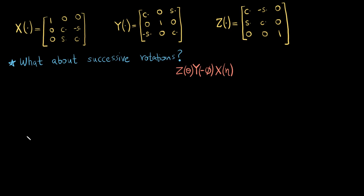Now let's say if a point first rotates about one axis, then rotates about another axis, or it can rotate about as many axes as it wants to. So if a point first rotates about the z-axis by theta, then rotates about the y-axis by negative phi, and then rotates about the x-axis by angle nu — how do we write the rotation matrix, and what does this actually represent?